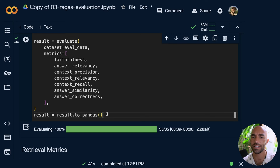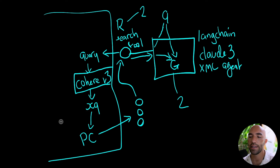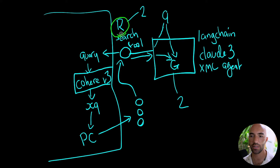So what does all this mean? We have faithfulness, answer relevancy, context precision, context relevancy, recall, answer similarity, and answer correctness. Our retrieval metrics are what we use to evaluate the retrieval pipeline. Retrieval is naturally the first step in every RAG pipeline, so it makes sense to focus on retrieval metrics first — primarily context recall and context precision.